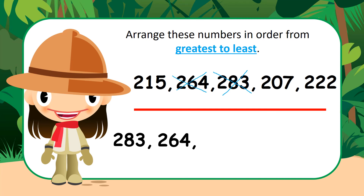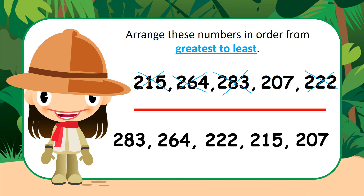What will our next number be? 222 — excellent job! And what's next? 215 — very good! So that means our smallest number is 207. Way to go, Daniel! You did an excellent job, boys and girls.